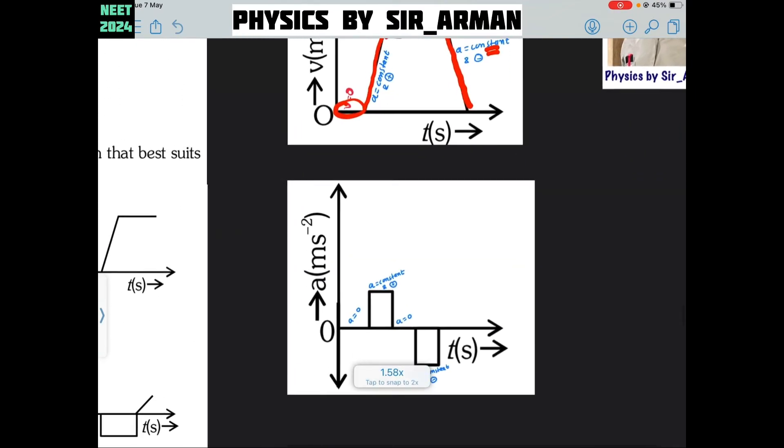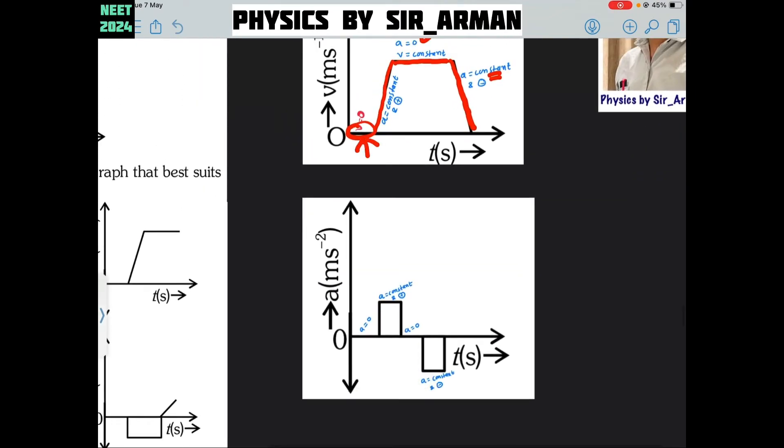If you try to draw the same graph here velocity is 0, so acceleration is 0. Again in the second part here the acceleration is constant. Here you can see the acceleration is constant. In this part the acceleration is constant. This line is represented by this horizontal line because it is A versus T graph.